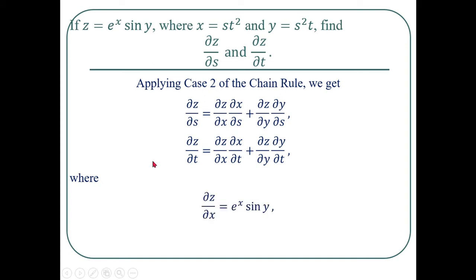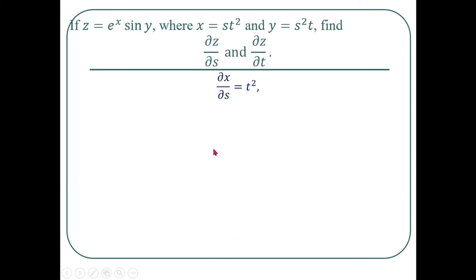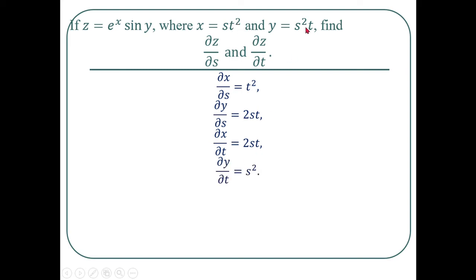Computing the partial derivatives: ∂z/∂x = eˣ sin(y), ∂z/∂y = eˣ cos(y). For x = st²: ∂x/∂s = t² and ∂x/∂t = 2st. For y = s²t: ∂y/∂s = 2st and ∂y/∂t = s². Therefore ∂z/∂s = eˣ sin(y) · t² + eˣ cos(y) · 2st.